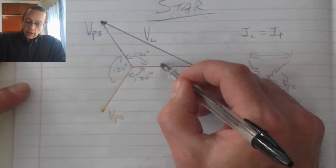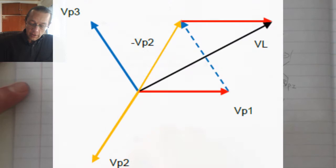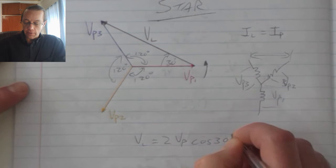When I go and I measure this angle over there, I find that it is at 30 degree phase shift. So if I want to calculate my line voltage, I see that it is two phase voltages cos 30 degrees.